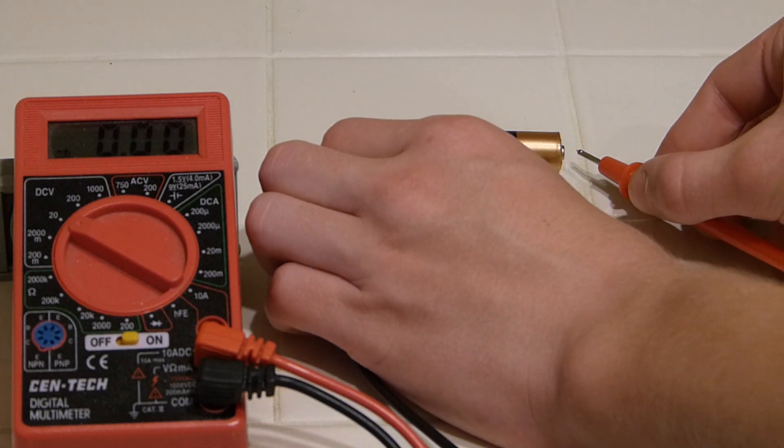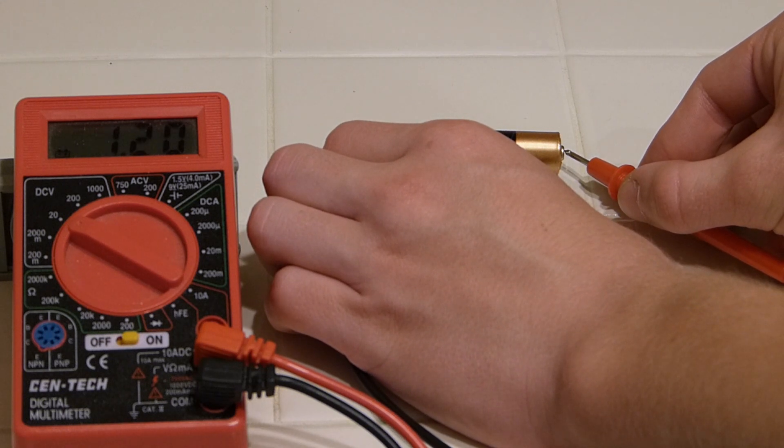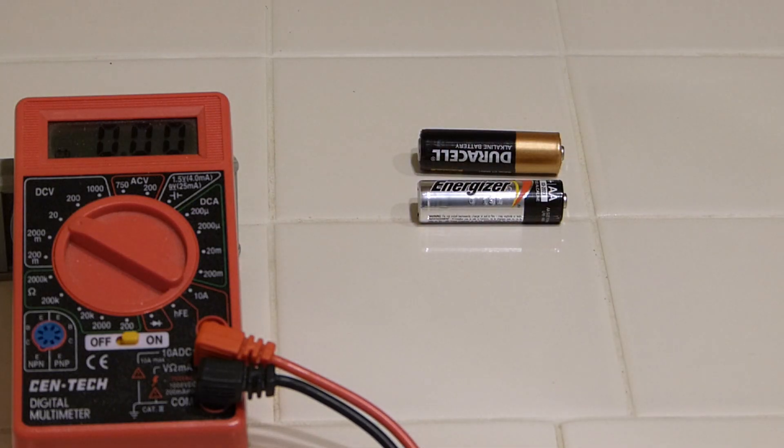The Duracell is showing 1.2 and as soon as it gets any load on it, it goes less than that. Believe me, it's beat.